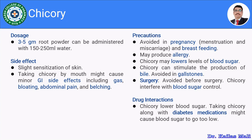Moving towards drug interactions — as Chicory reduces blood sugar level, if Chicory is prescribed with an anti-diabetic drug, there might be chances of excessive lowering of blood sugar level. One should monitor blood sugar levels when Chicory is combined with an anti-diabetic drug, or it should not be combined with the anti-diabetic drug. Either the herb or the anti-diabetic drug should be stopped.